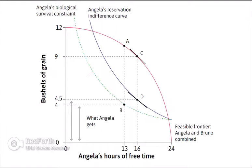In terms of rent, the landlord doesn't want to give Angela too much beyond biological survival. The fewer hours of free time the laborer has, the more food she consumes, as the biological survival constraint curve becomes steeper — implying she requires more bushels of grain, which means the landlord receives less economic rent the more hours she works. We're trying to find the sweet spot between hours worked and bushels of grain.